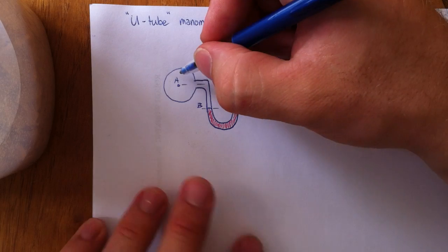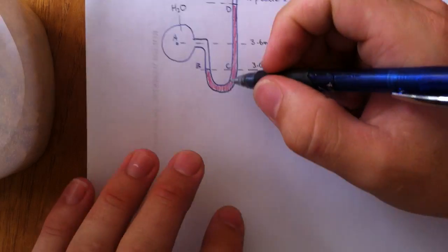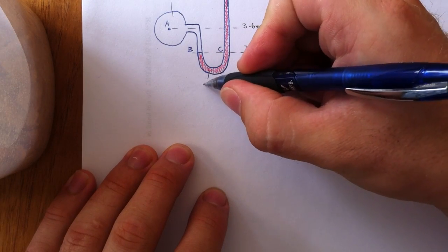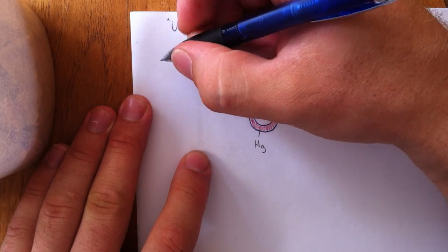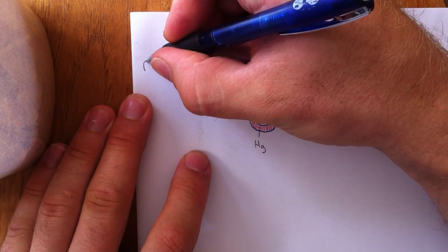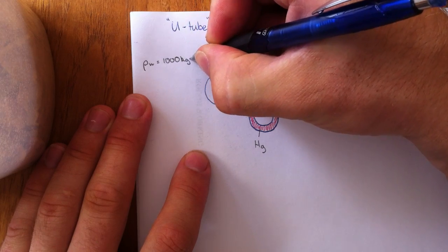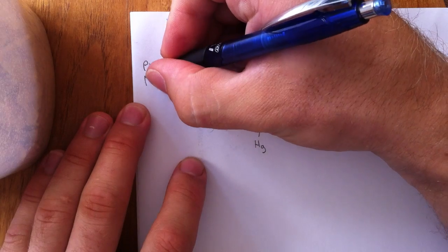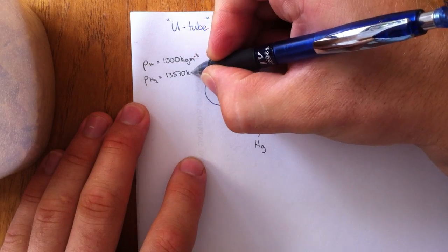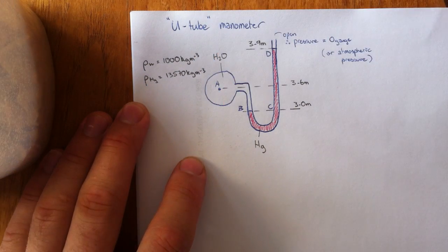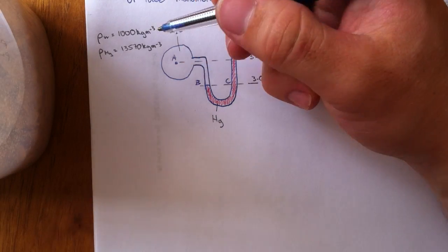For this particular problem we'll call this liquid water and this liquid mercury. The density of water at 4 degrees Celsius is 1000 kg per cubic meter. The density of mercury is 13,570 kg per cubic meter, and we'll be using those figures in our problem.